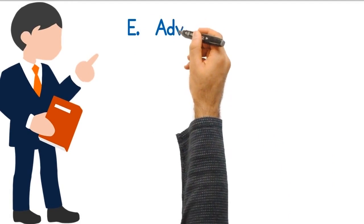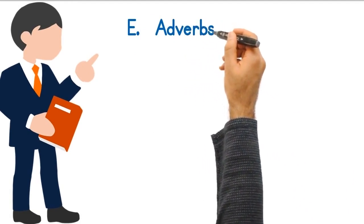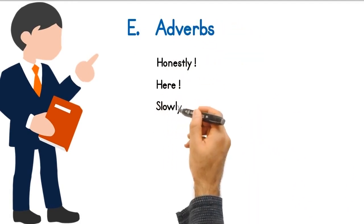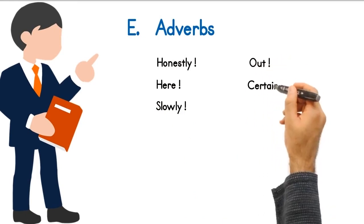E. The following are examples of adverbs used as interjections: Honestly, Here, Slowly, Out, Certainly, Well.